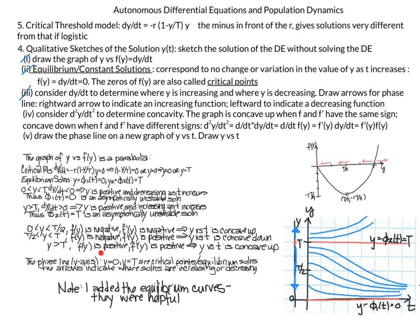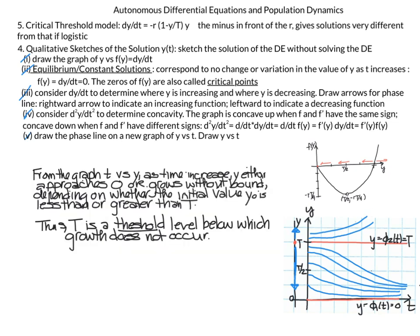For y greater than T, solutions are concave up and growing. From this graph, the point of our critical threshold is clear: T is our critical threshold. If the initial condition is below T, the growth decays down until eventually we reach zero. Whereas if the population is above T, we see exponential growth. So T is a threshold level below which growth does not occur.